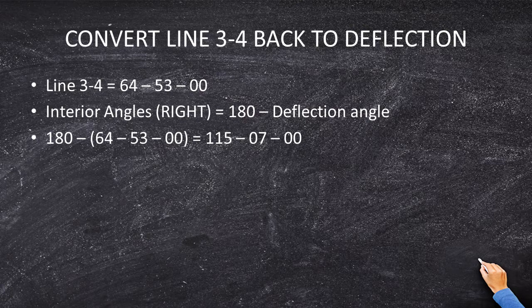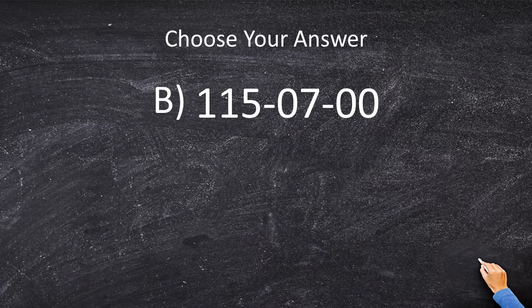We do it the exact same way as before. This was an angle to the right, and our formula was: interior angle = 180° − deflection angle. Rearranging: deflection angle = 180° − interior angle, so 180° − 64°53'00" = 115°07'00". Answer choice B is the correct answer.